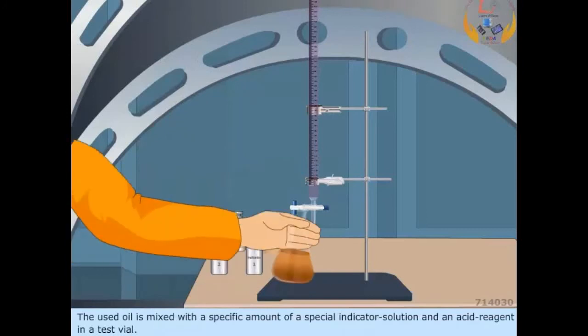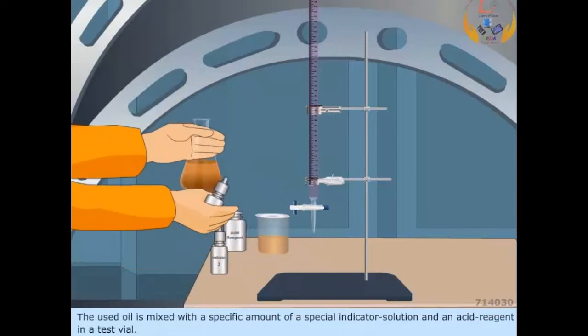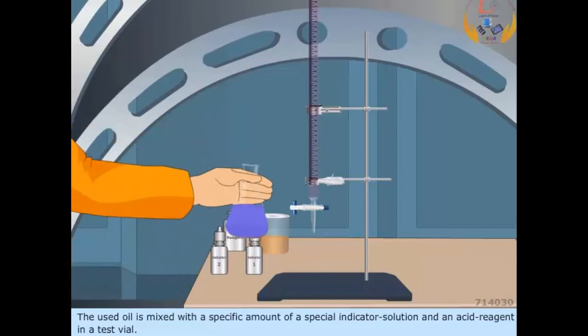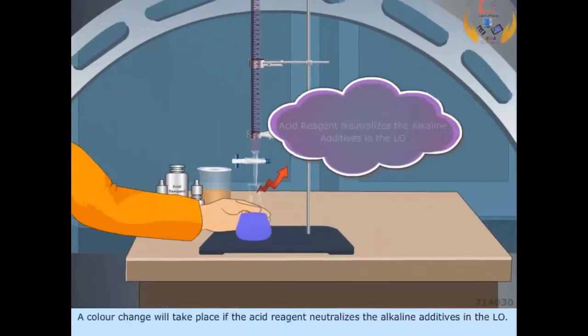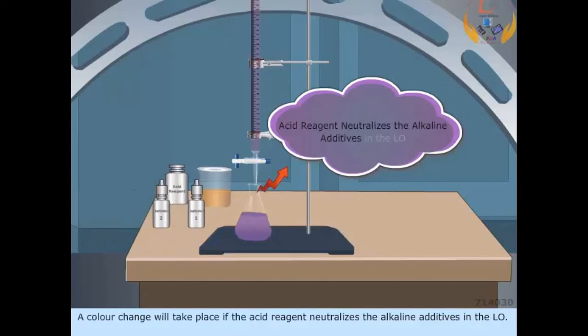The used oil is mixed with a specific amount of a special indicator solution and an acid reagent in a test vial. A color change will take place if the acid reagent neutralizes the alkaline additives in the lubricating oil.